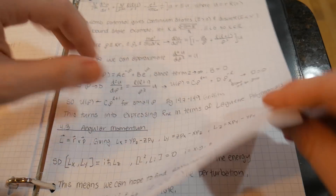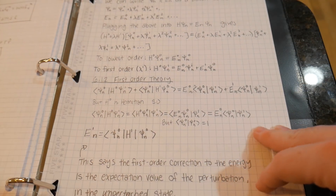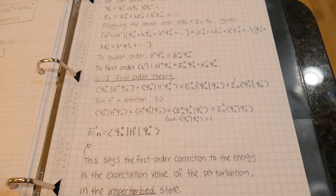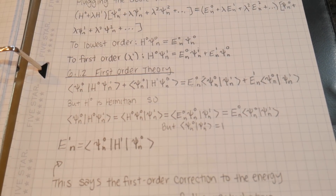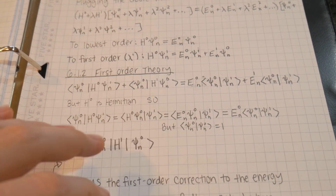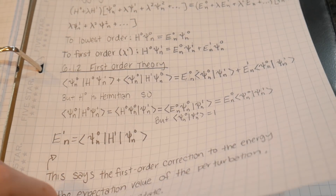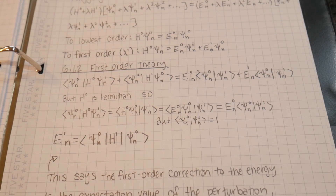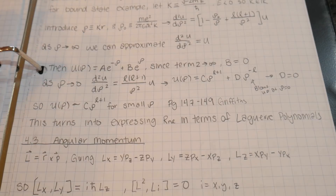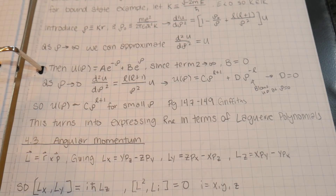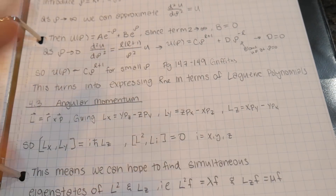The section we're on now is coming up right here — this is an example of perturbation theory. First-order is pretty straightforward; it's not too bad, especially when you're working with non-degenerate perturbation theory, which means you don't have repeating eigenvalues. And here we have some basic definitions where we're getting into angular momentum.